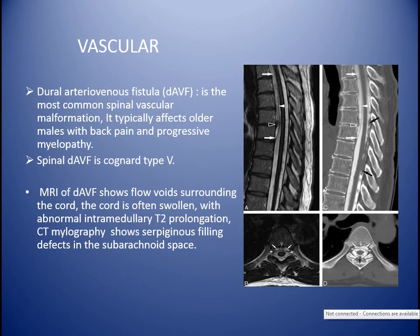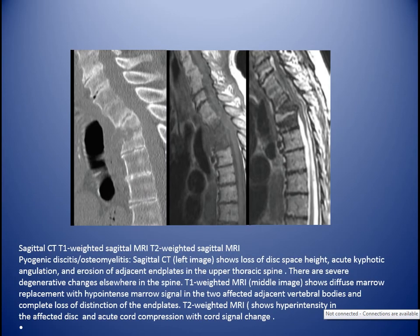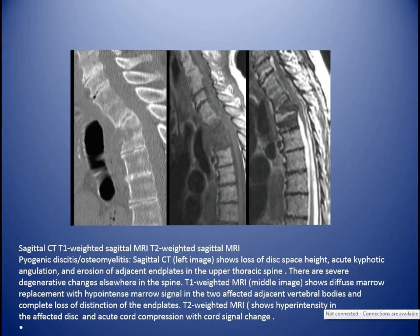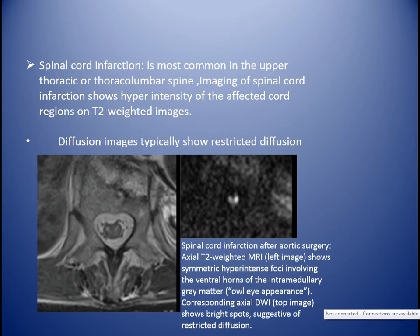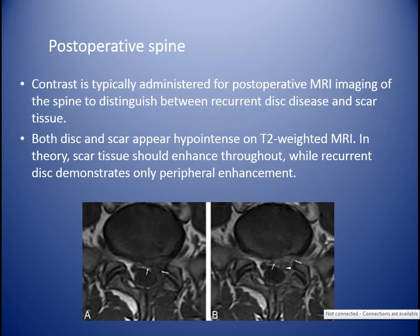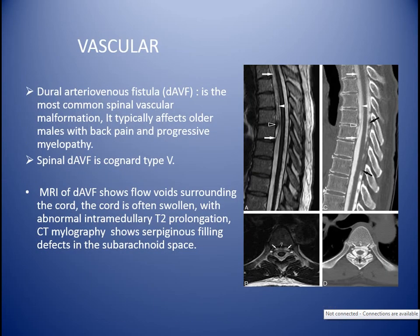To differentiate between pyogenic discitis and tuberculosis: TB spondylitis affects more than one level with skip lesions, tends to involve the thoracic and upper lumbar spine, and has more prominent paraspinal abscess. TB may also cause acute angular kyphosis and paraspinal calcification.